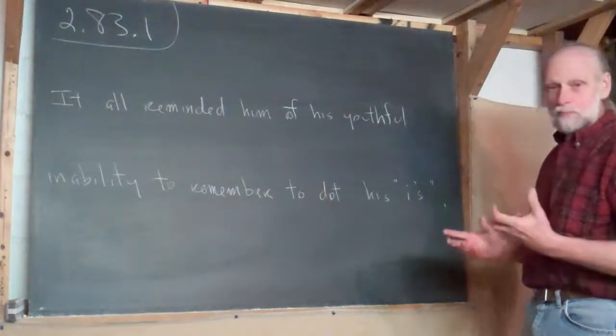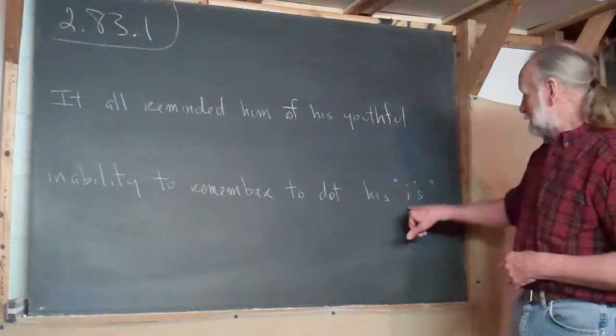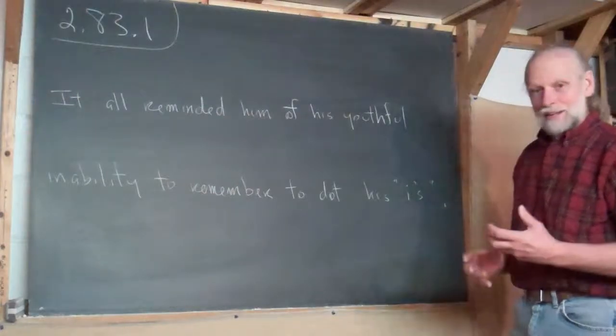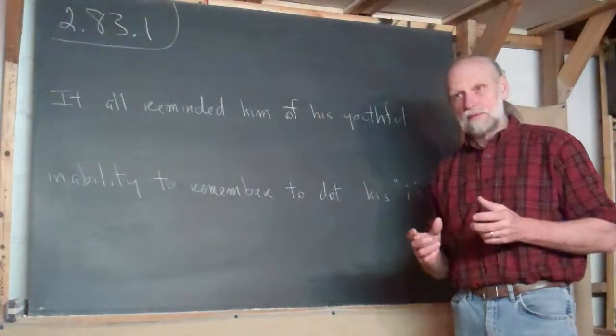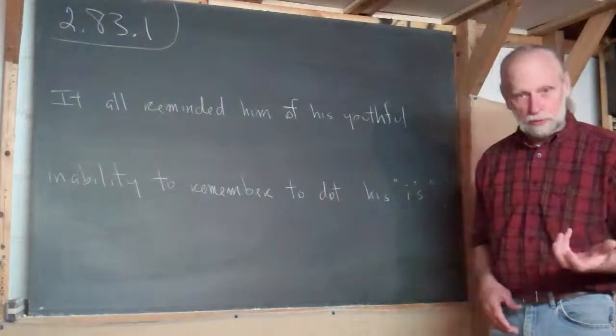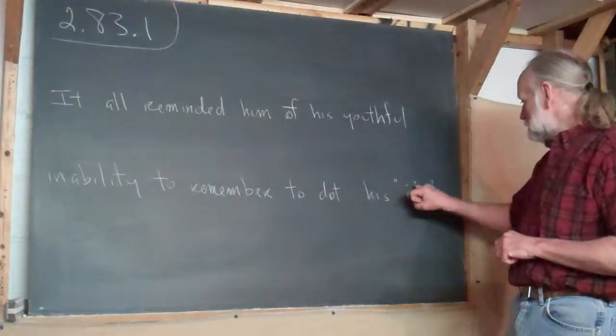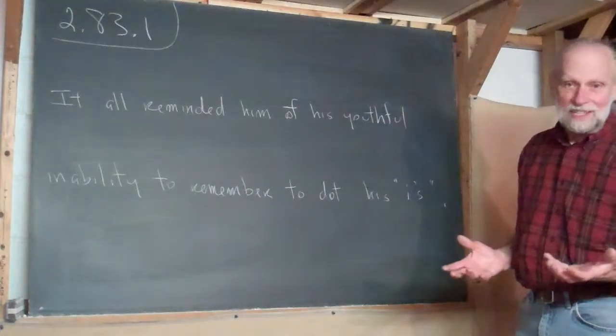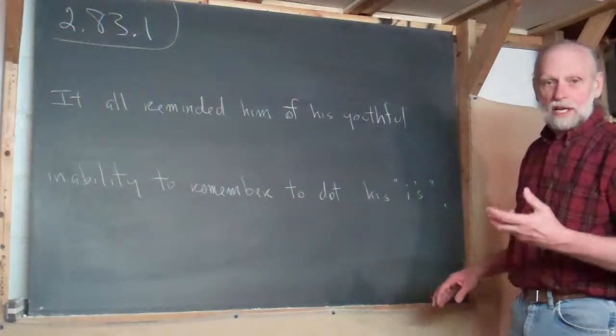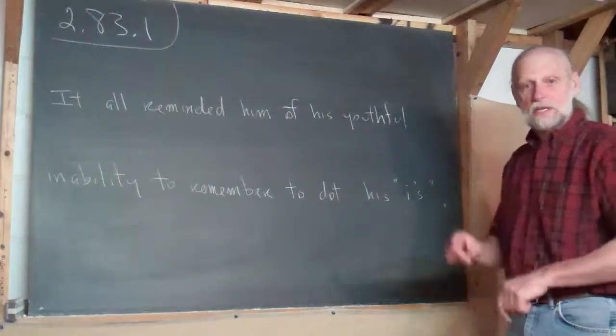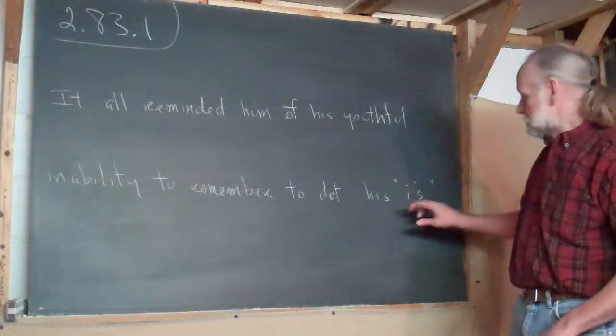Now this is made more complicated by the fact that it's plural. There's also a rule that if you take a letter and you make it plural, then you use an apostrophe. Otherwise it looks like 'is'. I could have said 'and cross his T's' and that would have been T apostrophe S.